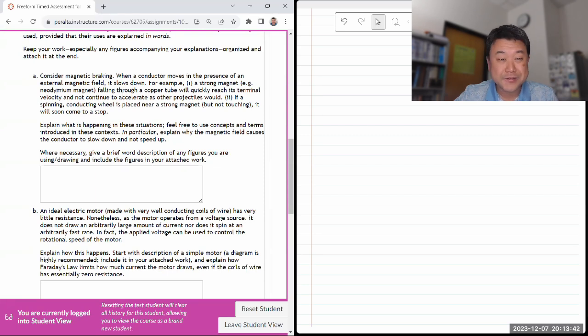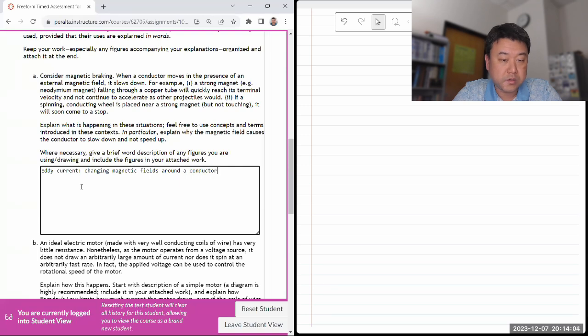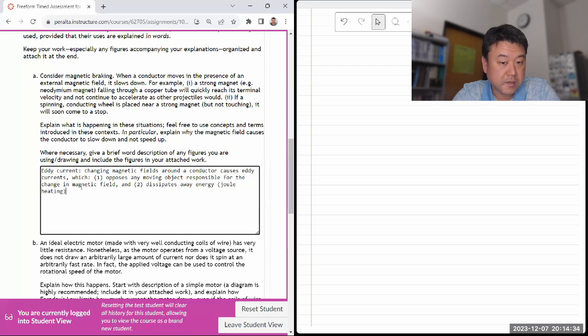For example, I have a video of that that I help you. So if spinning, yeah, it goes to stop. So the key concepts and terms introduced in this context is really eddy currents. Changing magnetic fields around the conductor causes eddy currents, which does a few things. Opposes any moving object responsible for the change in magnetic fields. And dissipate away energy, joule heating with this energy coming from the mechanical energy.